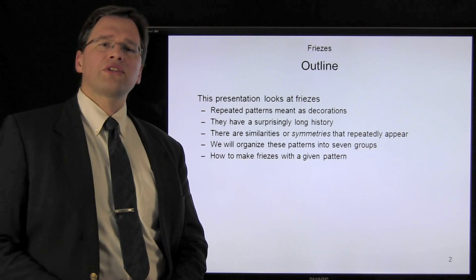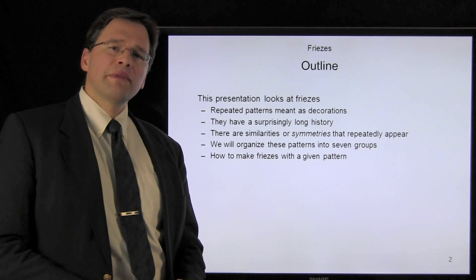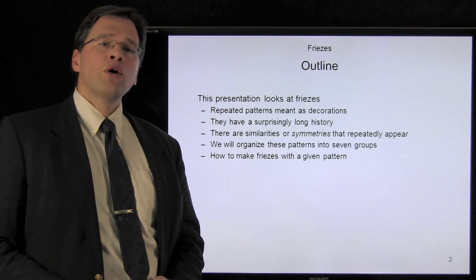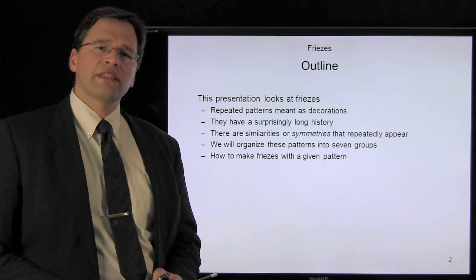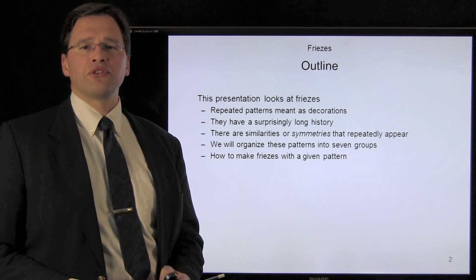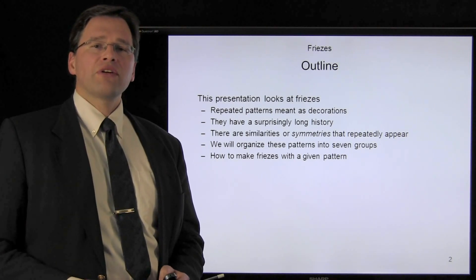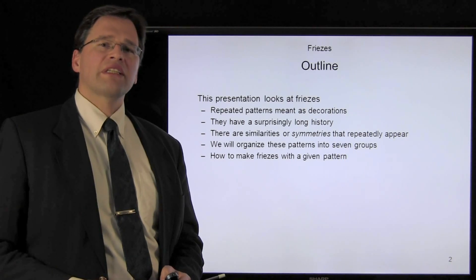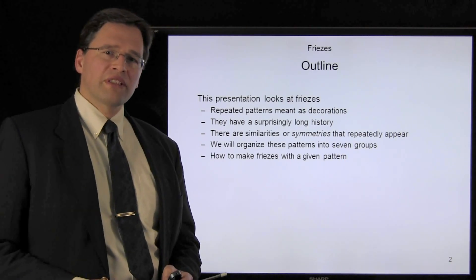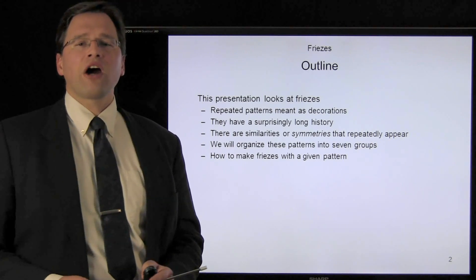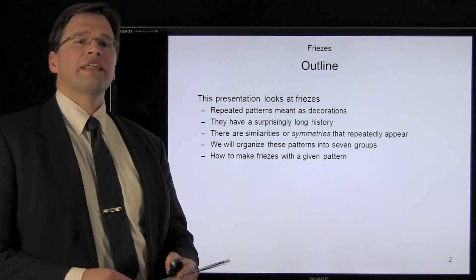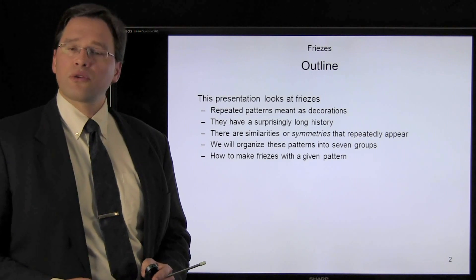In this time, it was noticed that there are certain similarities, or symmetries, that appear over and over again. We're going to see that we can organize these symmetries into one of seven symmetry groups, and every single frieze will contain the characteristics of one of these seven groups. Once we've described these seven groups, we will then see how we can take an arbitrary pattern and convert it into a frieze satisfying the conditions of each of those groups.